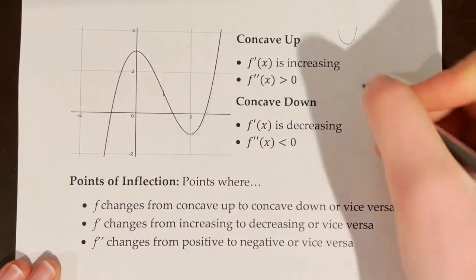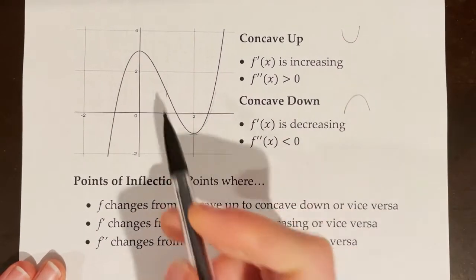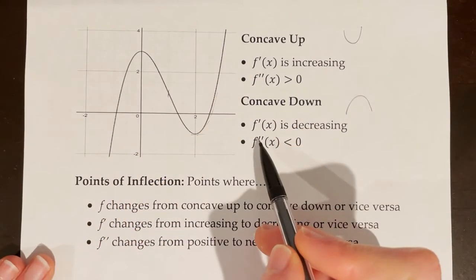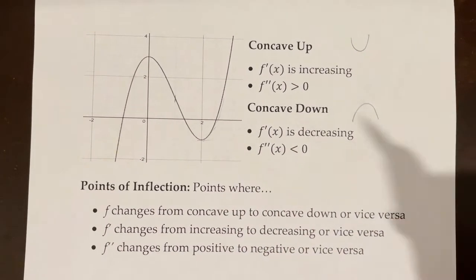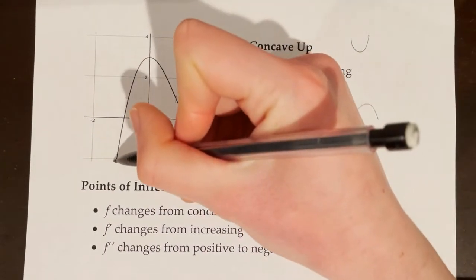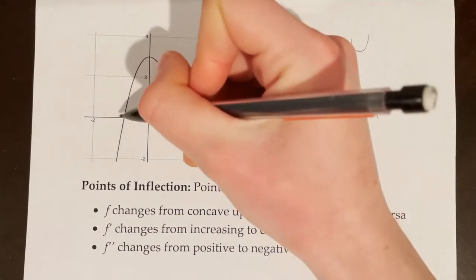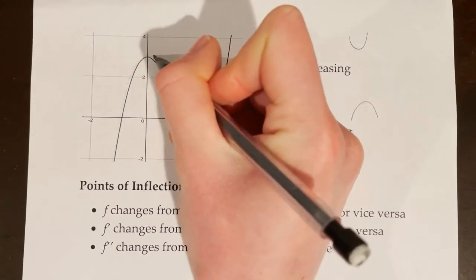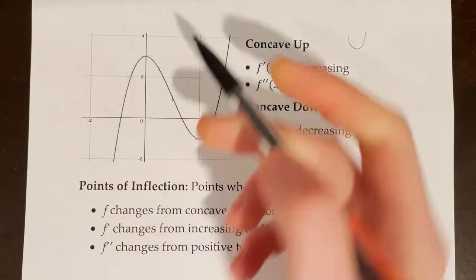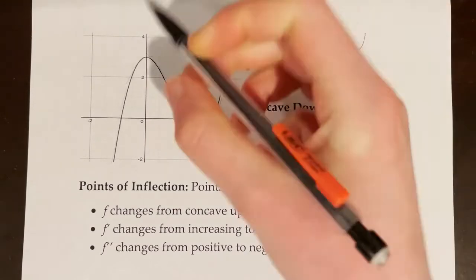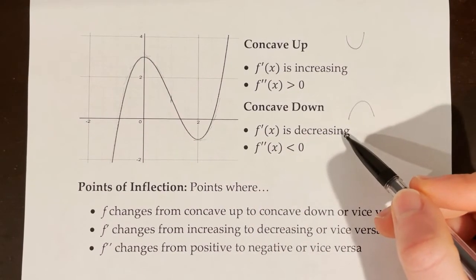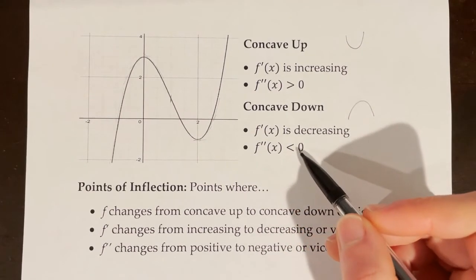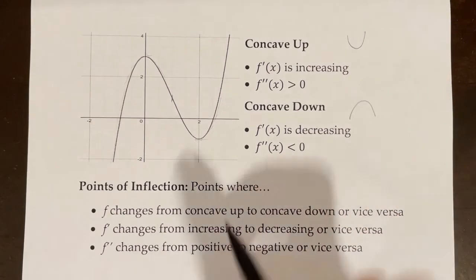When the graph is concave down, that just means the original function f looks like an arch. Our graph here is concave down over a certain interval. When a function is concave down, f' — the first derivative — is decreasing. The slope starts very steep positive, maybe 10, then 5, then 3, then one half, then zero at that horizontal tangent line, then turns negative past the relative maximum. So f'' of x, the second derivative, is less than zero.